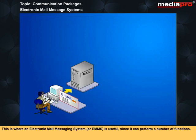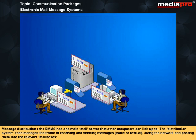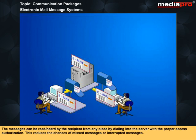This is where an electronic mail messaging system, or EMMS, is useful since it can perform a number of functions. Message distribution: the EMMS has one main mail server that other computers can link up to. The distribution system manages the traffic of receiving and sending messages, voice or textual, along the network and posting them into the relevant mailboxes. The messages can be read or heard by the recipient from any place by dialing in to the server with proper access authorization, which reduces the chances of missed or interrupted messages.